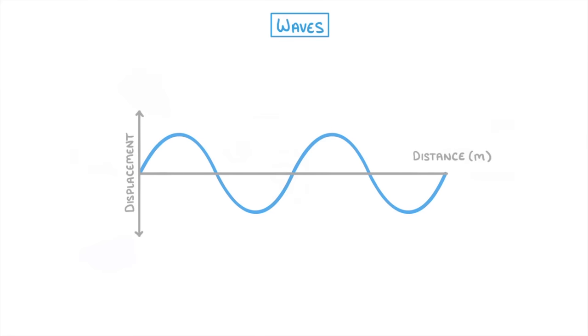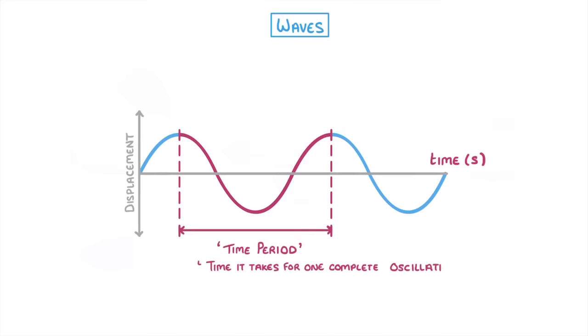Now sometimes you might see a displacement time graph instead, which looks pretty much the same. But because we have time on the x-axis instead of distance, the length of one complete oscillation would be the time period instead of the wavelength. And the time period is just the time it takes for one complete oscillation.